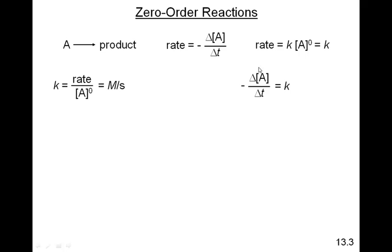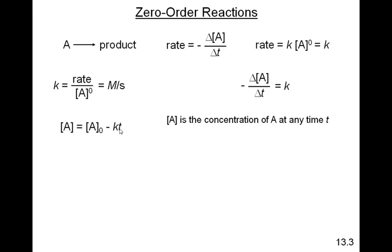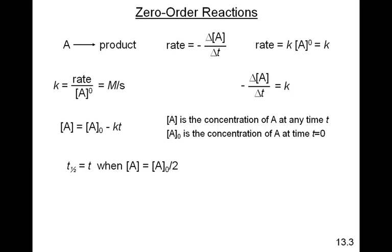So if we set these two rate equations equal to each other, we get something that looks like this. We do a little math on it, and we get an equation that looks like this, which again is a linear equation. There's Y, there's your Y-intercept, there's your slope, there's your X, where A is the concentration of A at any time T, and A₀ is the concentration at T equals zero. When we think about the half-life, T one-half is equal to T when A is equal to A₀ divided by 2 — the initial concentration divided by 2.